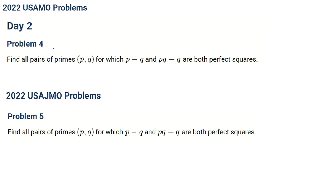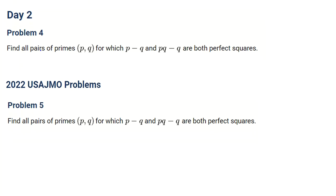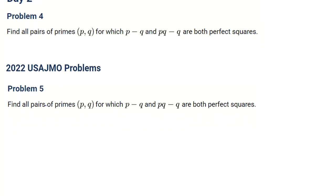In this video, we want to consider problem number 4. These two problems are the same: the fourth problem of USAMO and the fifth problem of USAJMO, both for 2022. Let's read the problem. Find all pairs of primes P, Q for which P minus Q and PQ minus Q are both perfect squares.